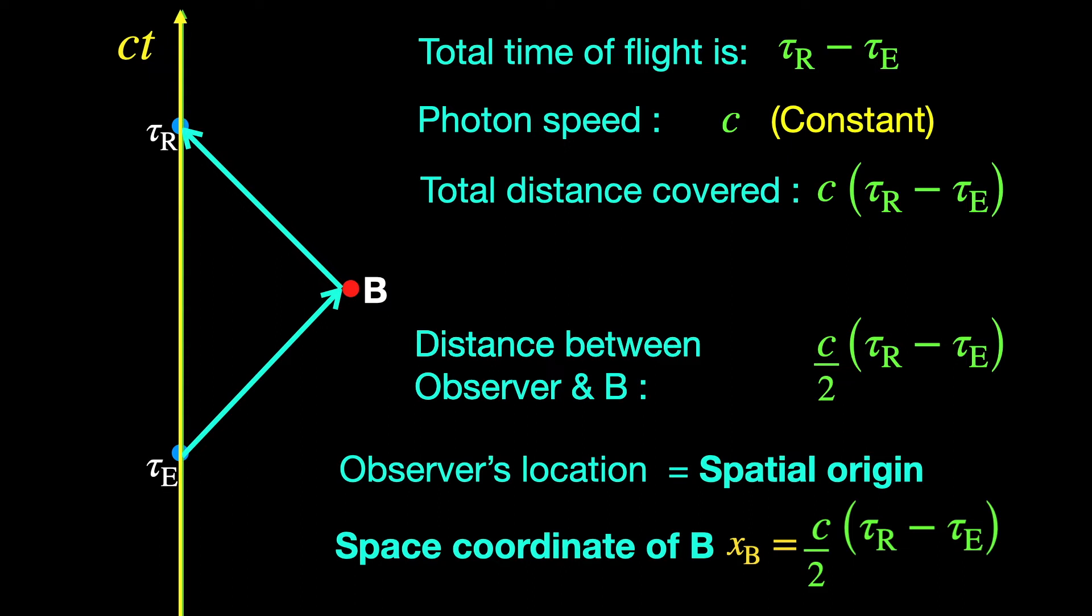Okay, so what about the temporal coordinate of B? To get that, first we have to fix the temporal origin which the observer may choose anywhere on the time axis, that is on his world line. Let's say some event point O is chosen by him. Once this choice is made, the origin of the space-time coordinate system is fixed.